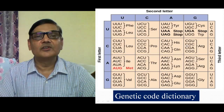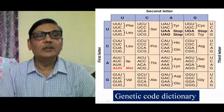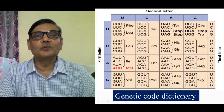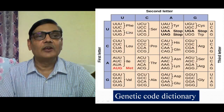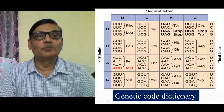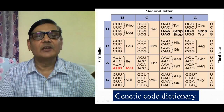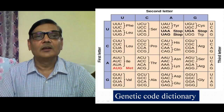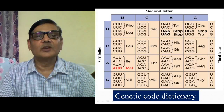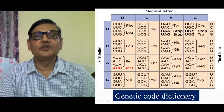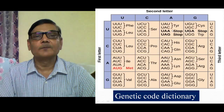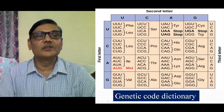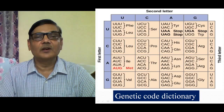Out of these 64 codons, only 61 encode for specific amino acids, because three recognize none of the amino acids. UAA is a stop codon, also considered a terminator codon. Likewise, UAG is a stop codon and UGA is the third stop or terminator codon. So out of 64 codons, three are terminator codons and only 61 are actually encoding for specific amino acids.